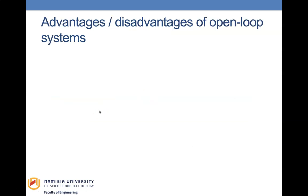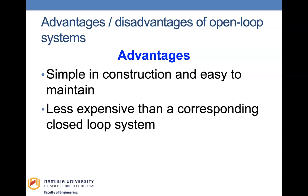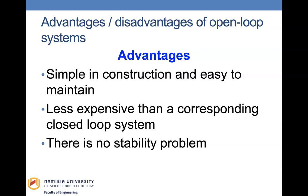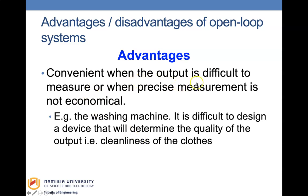There are advantages and disadvantages for both systems. For open loop systems, the advantages are that they are simple in construction and easy to maintain, less expensive than a corresponding closed loop system, and there is no stability problem. They are also convenient when the output is difficult to measure — like measuring how clean clothes are — or when precise measurement is not economical, such as measuring garden moisture precisely.